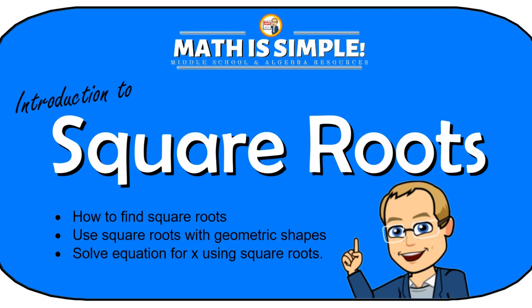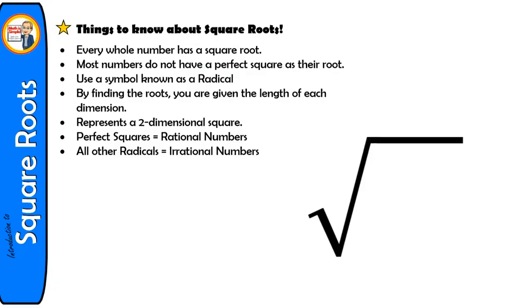Before we get started, there are a couple things to know about square roots. Every whole number has a square root. Most numbers do not have a perfect square as their root and it comes out as a decimal, but every whole number in these examples will have a perfect square root.